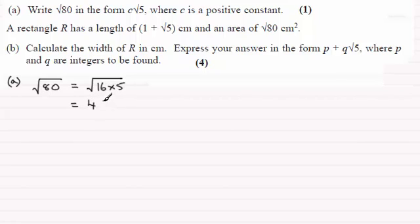Okay, so we've got it in that form where c is a positive constant. If we're asked to state the value of c, the answer would have been 4. Okay, so that's part A, now move on to part B.